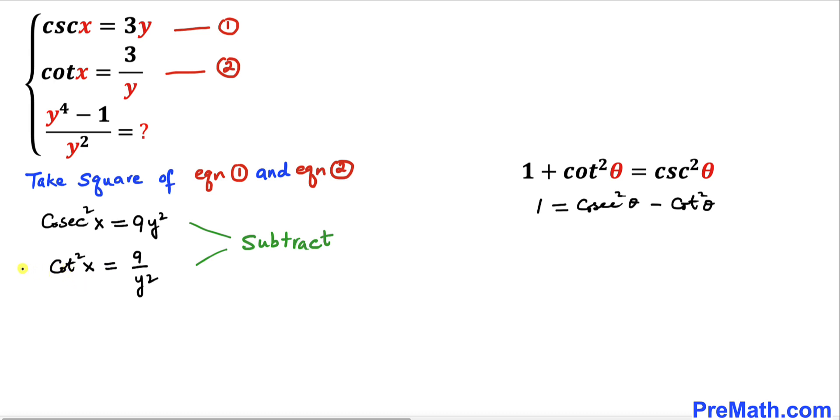Therefore I'm going to subtract this equation from this one. That's going to give us cosecant squared x minus cotangent squared x equals 9y squared minus 9 divided by y squared.